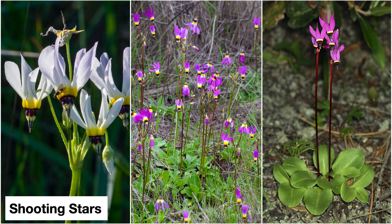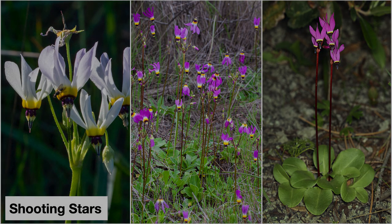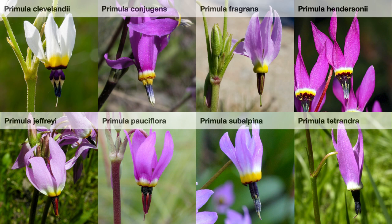Welcome to Shooting Stars of California. In this video we take a detailed look at the growth, reproduction, and morphological features of shooting stars, one of California's showiest wildflowers. California has eight species of shooting stars found in most areas of the state. To see a video about the two most commonly encountered species in lowlands of the California floristic province, click on the link at the end of this video.